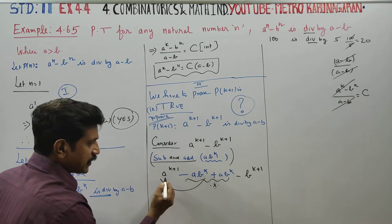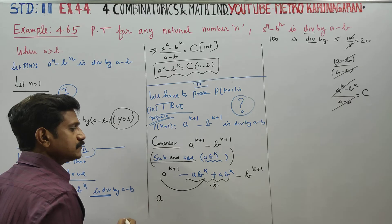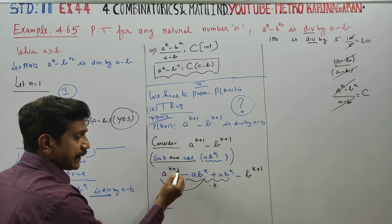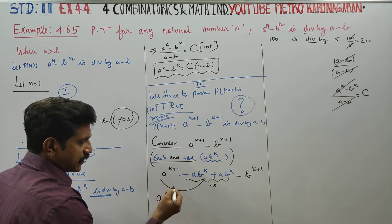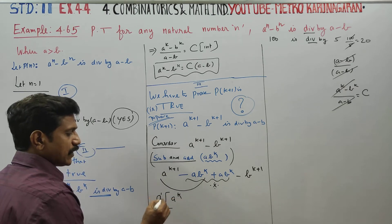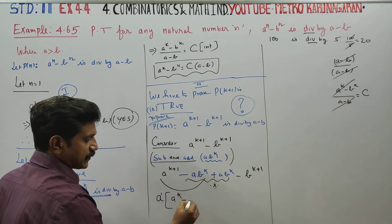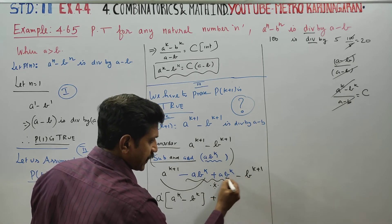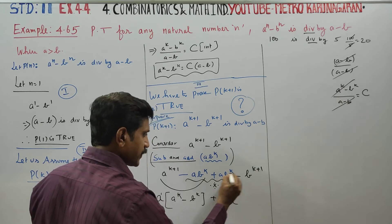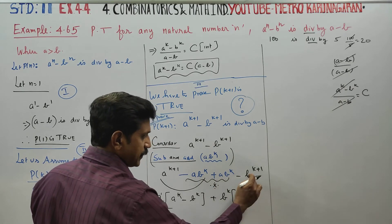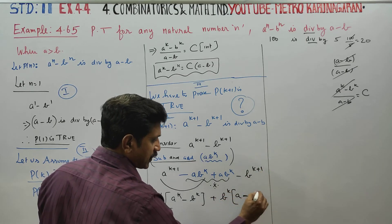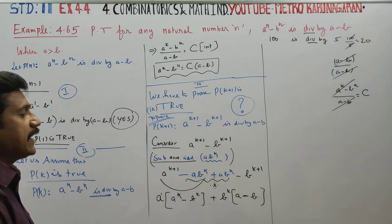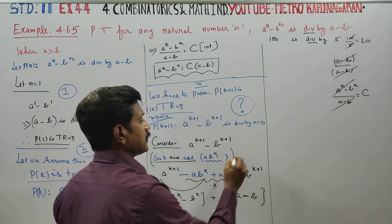Take 'a' as common from the first group: a times (a power k minus b power k). Then take 'b' as common from the remaining terms: b power k. Add and subtract — b power k. This completes the grouping.